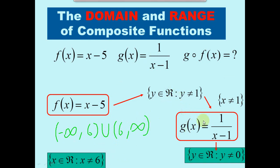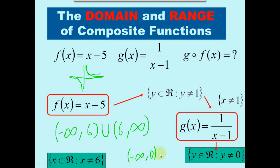Now for the range: you look at the end result when you plug everything in. The function has x cannot equal 1, and when you draw what this function looks like, y which is the range cannot equal 0 — as we go down we get close to 0 but never reach it, and from the other side we start at negative infinity, approach 0, and go downward but never touch 0. So the range is negative infinity to 0 union 0 to infinity.